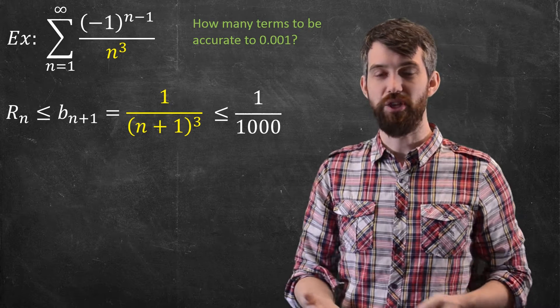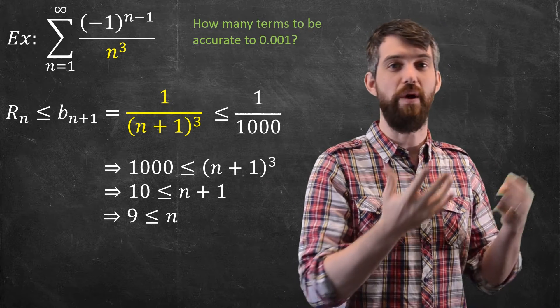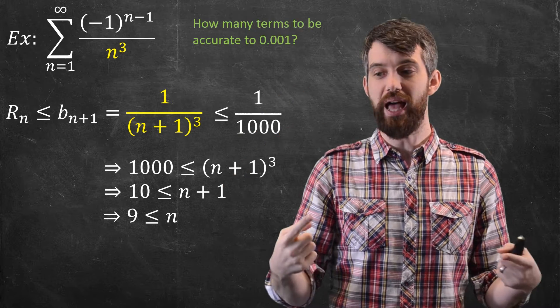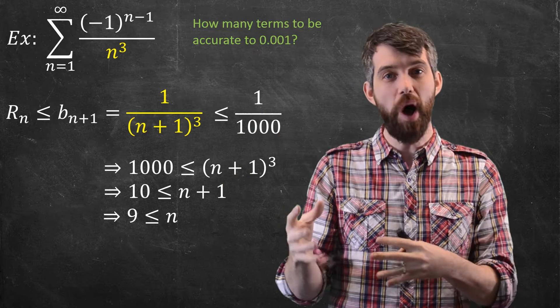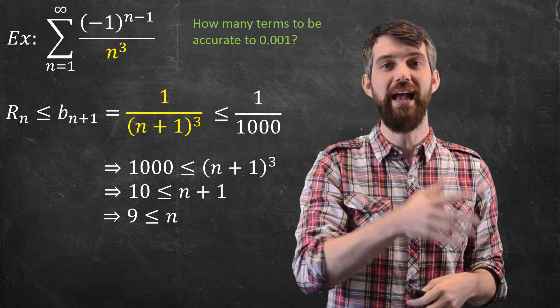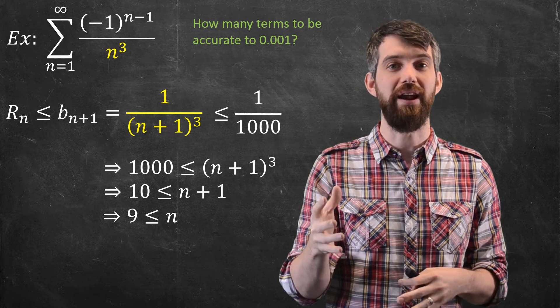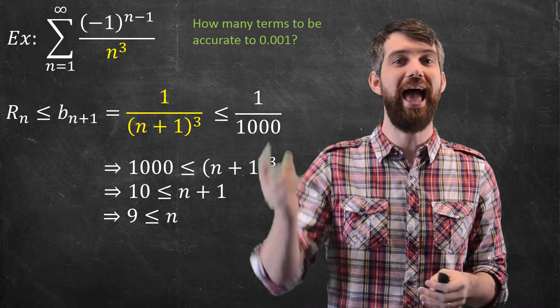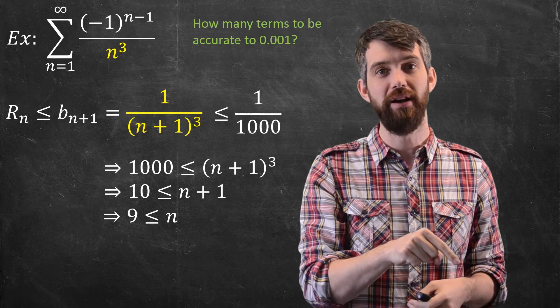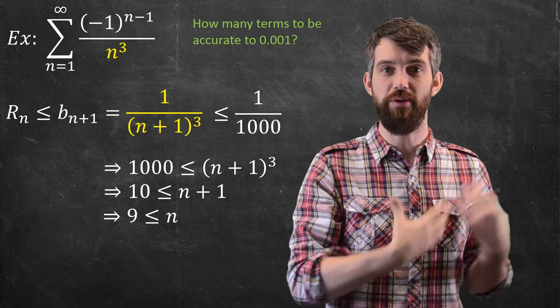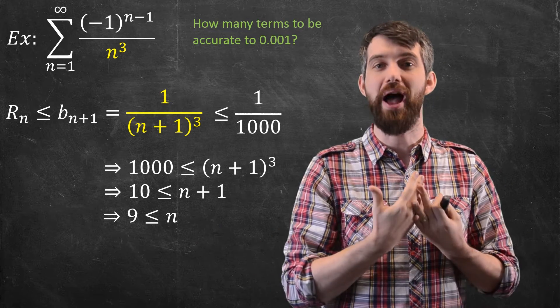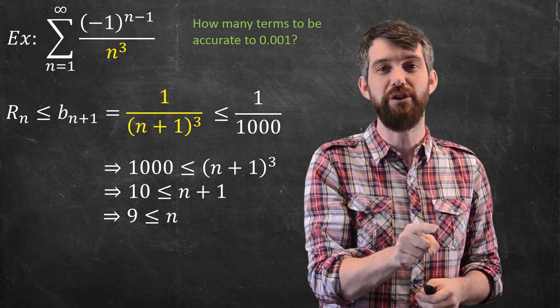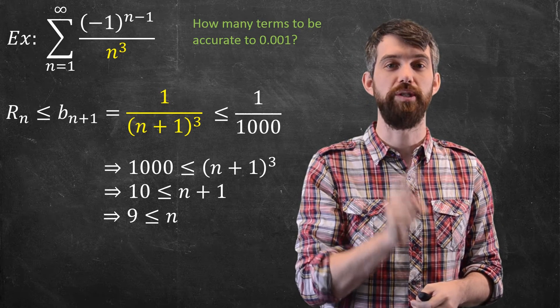This is an inequality, so I can just multiply it up. That's 1000 is less than n plus 1 cubed. I can take the cubed root of both sides. I can get 10 is less than n plus 1. And finally, I can say that 9 is less than or equal to n. So what does this tell me? It tells me that as long as I take n as nine or bigger, then that ensures that whatever approximation I write out, my ninth partial sum, then that ninth partial sum will be accurate to within 0.001.